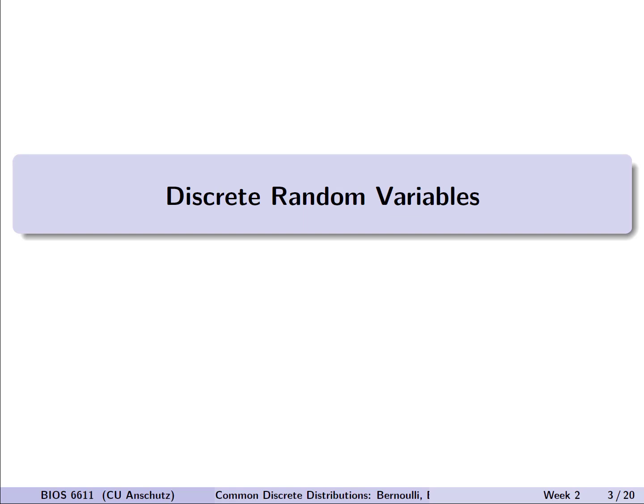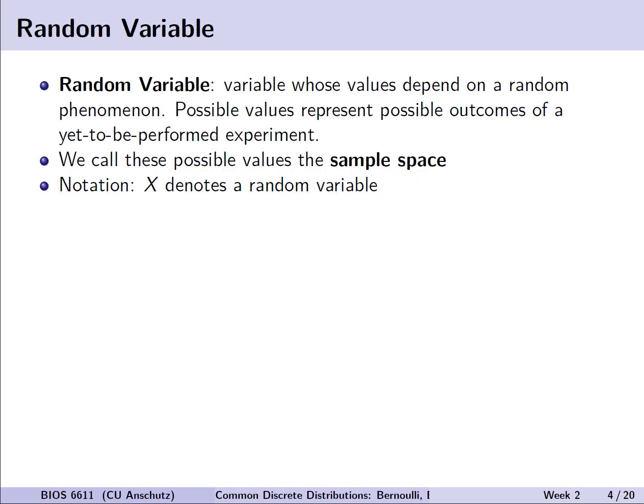Let's start with a quick refresher on what a discrete random variable is. Even more generally, a random variable is a variable whose values depend on some random phenomenon or data generating process. Possible values are represented by the range of possible outcomes of this yet to be performed experiment. We denote this range of possible values as the sample space.